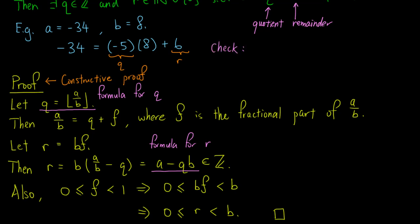We can check that the proof makes sense by plugging in the values of a and b in the above example. Since a = -34 and b = 8, q is the integer part of -34/8, which is -5. Also, r = -34 - (-5)(8) = 6. So we have the same answer as before.